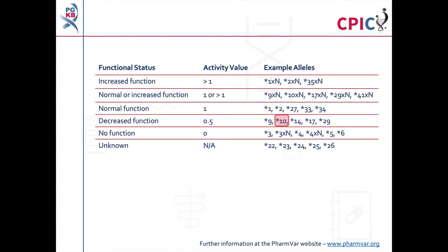The star 10 allele has been assigned an activity score of 0.5 in previous CPIC guidelines. However, it has been observed that the star 10 allele shows a greater reduction in activity compared to other decreased function alleles. As such, this guideline provides specific recommendations based on the presence or absence of the star 10 allele. Further clarification of the activity score assigned to the star 10 allele will come at the end of the CPIC CYP2D6 genotype to phenotype standardisation project. A link to information about the project is given in the description below this video.